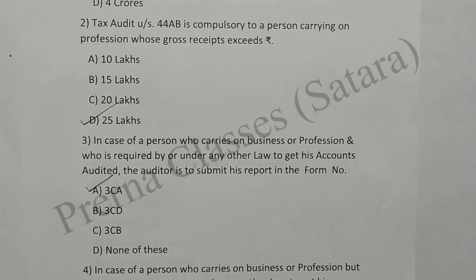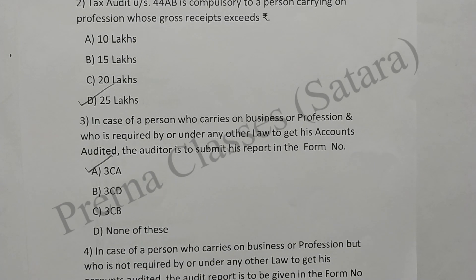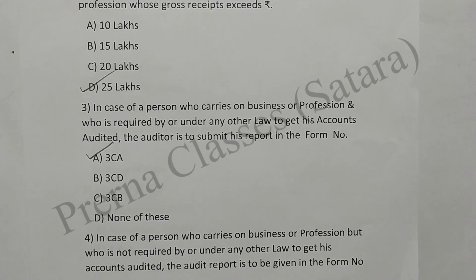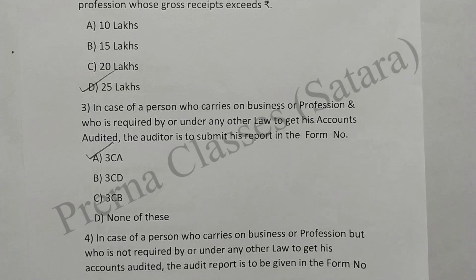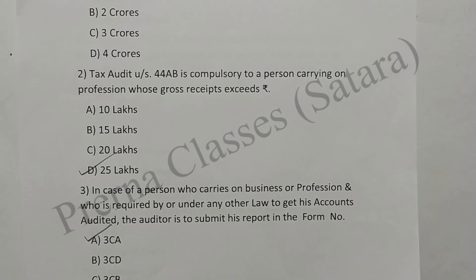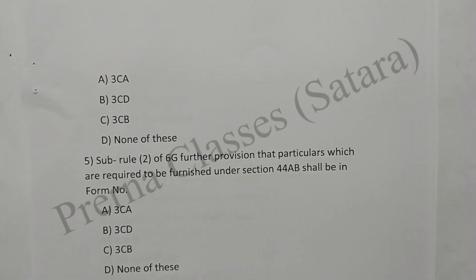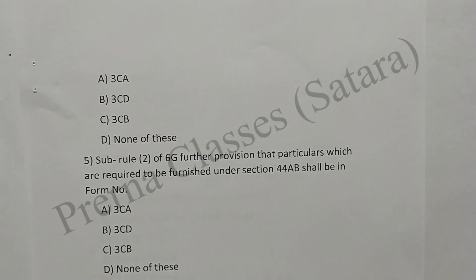Question 5: In case of a person who carries on business or profession but who is not required under any other law to get his accounts audited, the audit report is to be given in form number 3CB. Option C is correct.